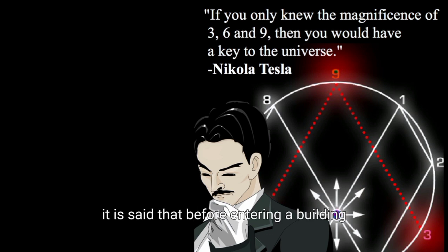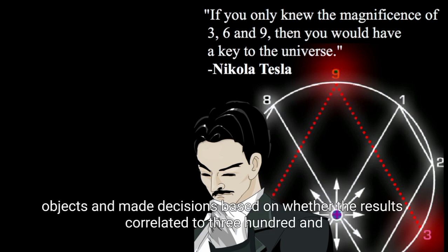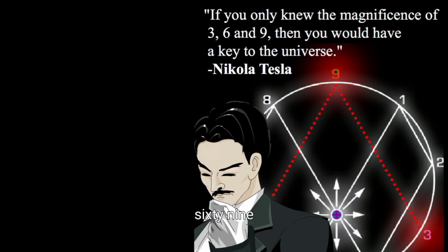It is said that before entering a building, he would circle the block three times. The number of every hotel room he rented had to be divisible by three. What is special about 3, 6, 9?